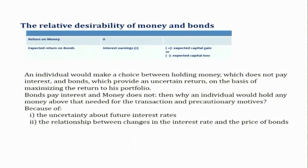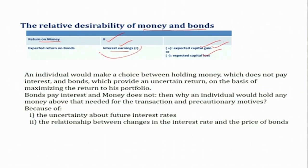In our model there are only two assets: money and bonds. Regarding the relative desirability of both, money does not pay any rate of interest — so its return is zero. Bonds pay interest earnings, and in addition there is either a capital gain or capital loss. Capital gain happens when the rate of interest declines in the future, causing the bond price to increase, resulting in capital gain in addition to interest earnings.